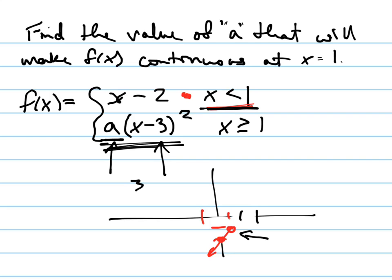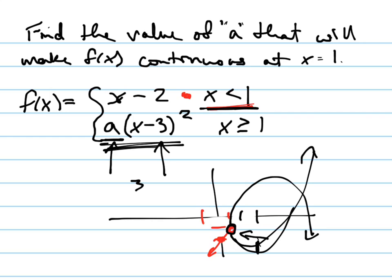So it might be something like this, or it might be something like this — I've got to figure out which. The vertex is right here and it touches exactly at that point. Seems really complicated, but it's not, because all you have to do — you don't even have to look at that picture — it's just an algebra problem.